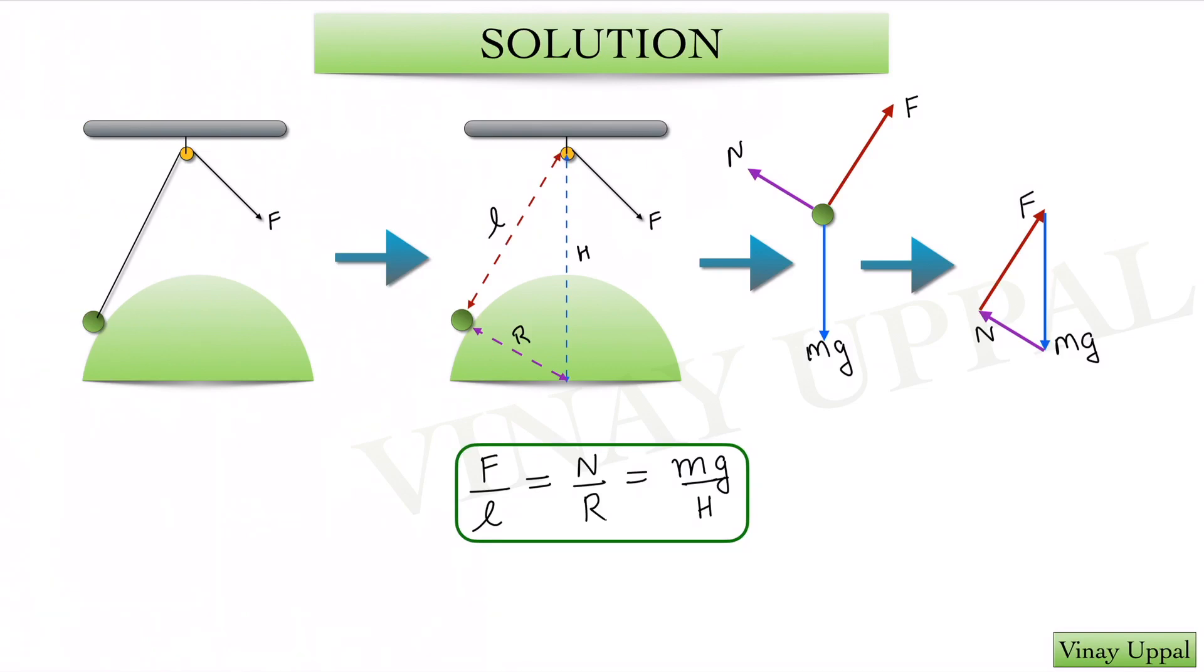I am just going to change the variable slightly. I am using R for the radius and I am using N for the normal force. If I just look at the force diagram, I have a force F along the string acting as a tension on this particle. Then I have a normal force along the radius. So I will have F, N, the normal force, and Mg.